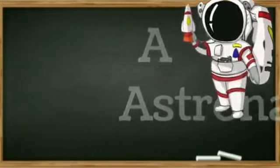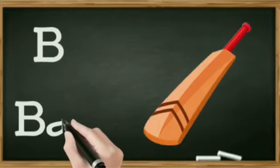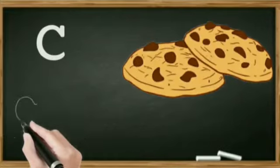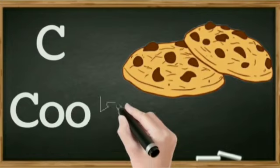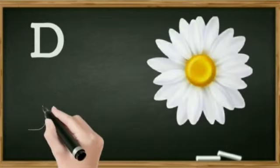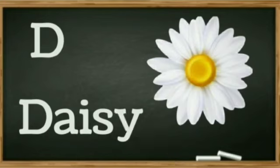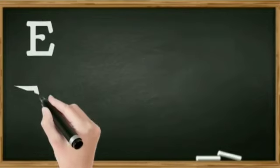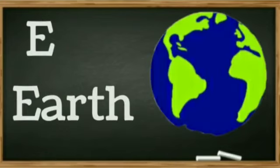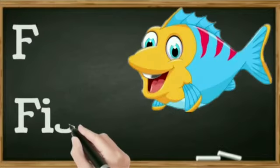A for astronaut. B for bat. C for cookie. D for daisy. E for earth. F for fish.